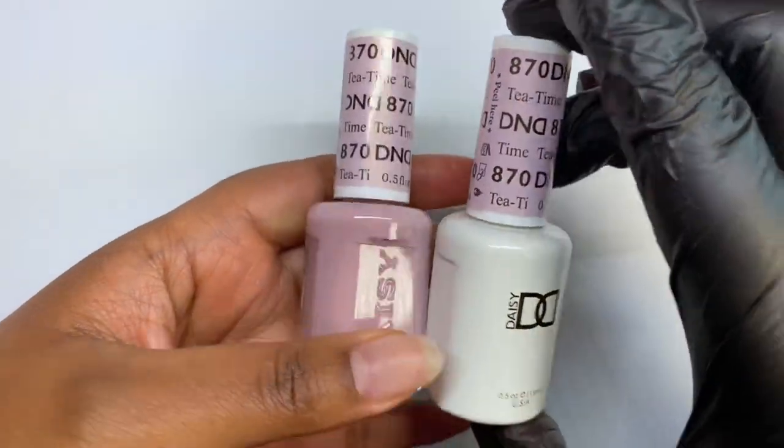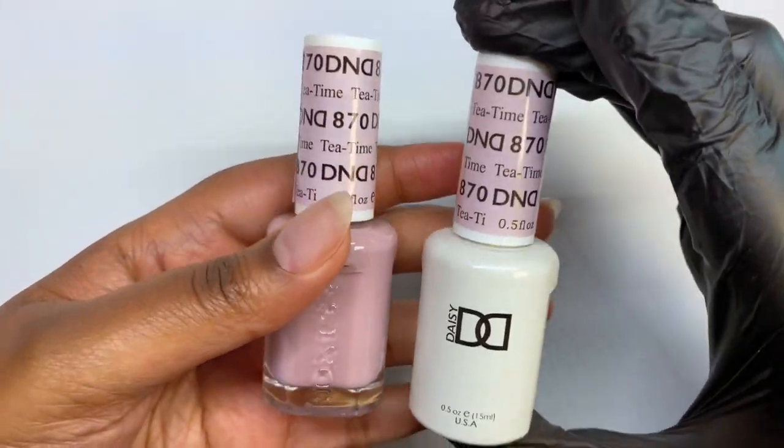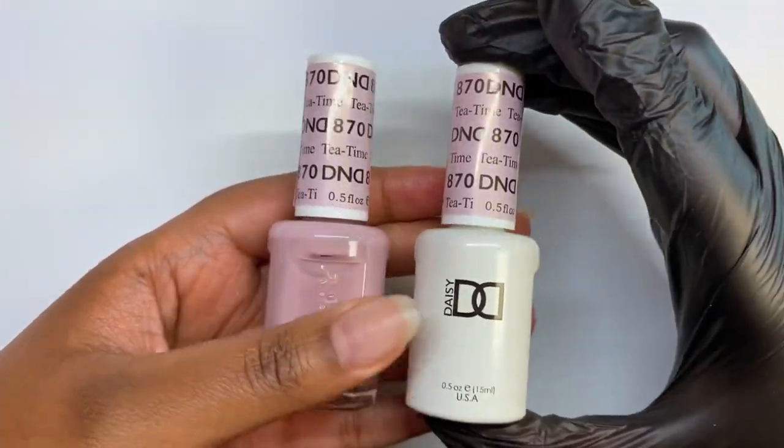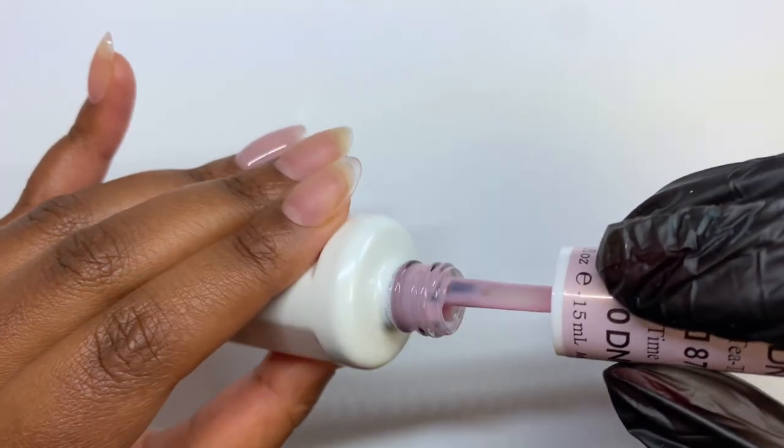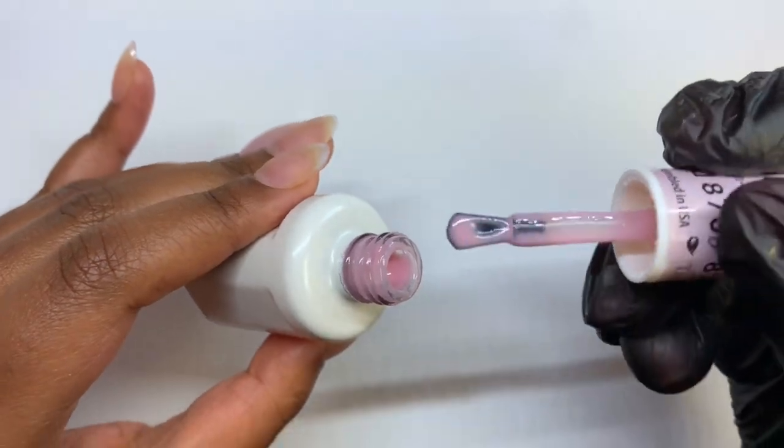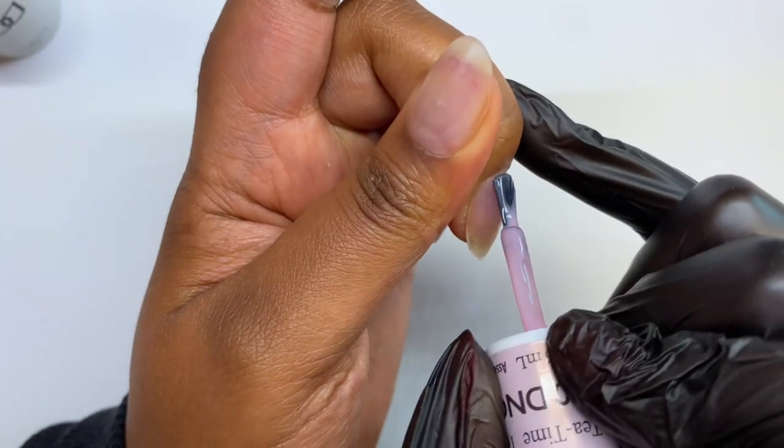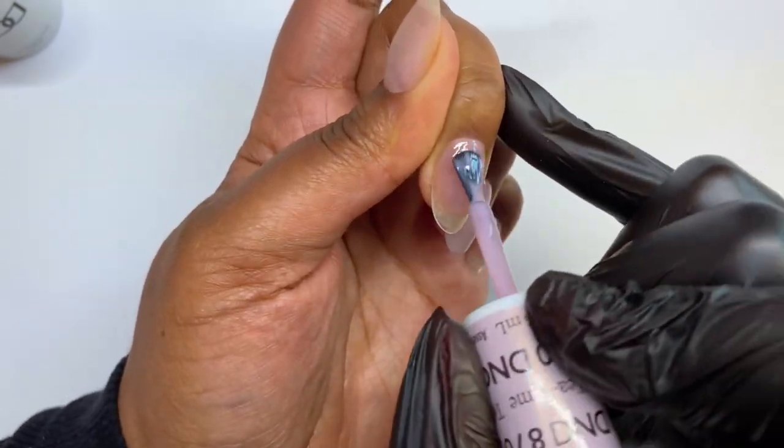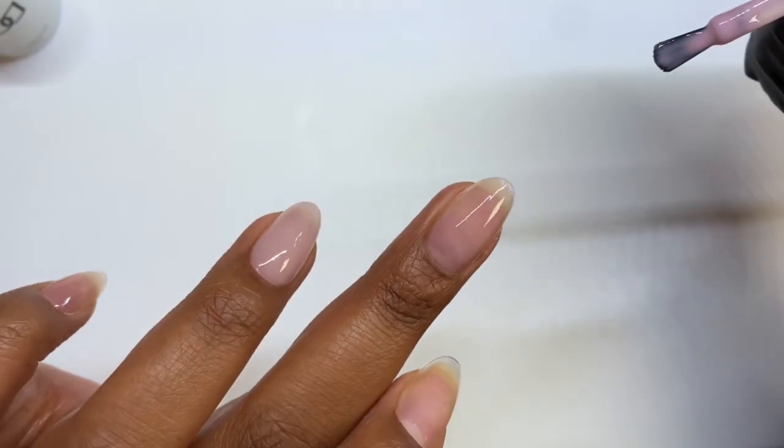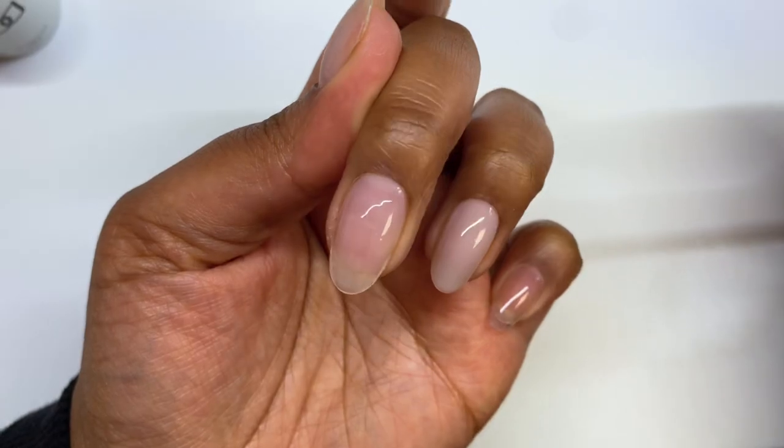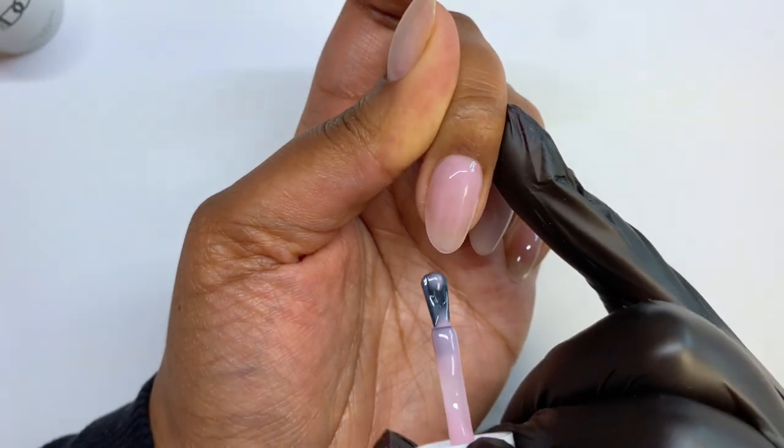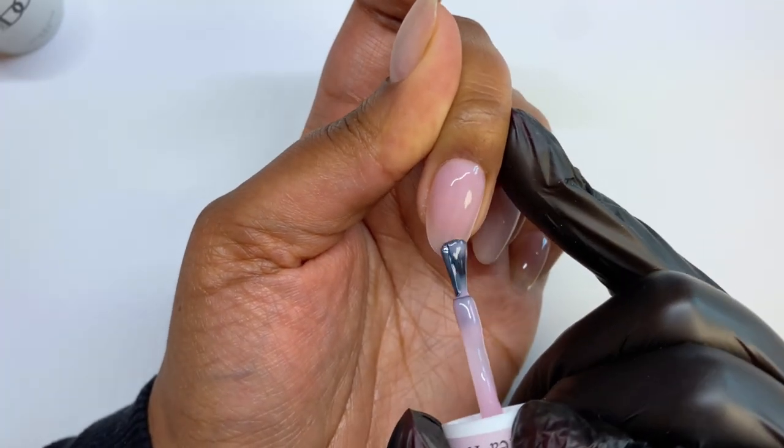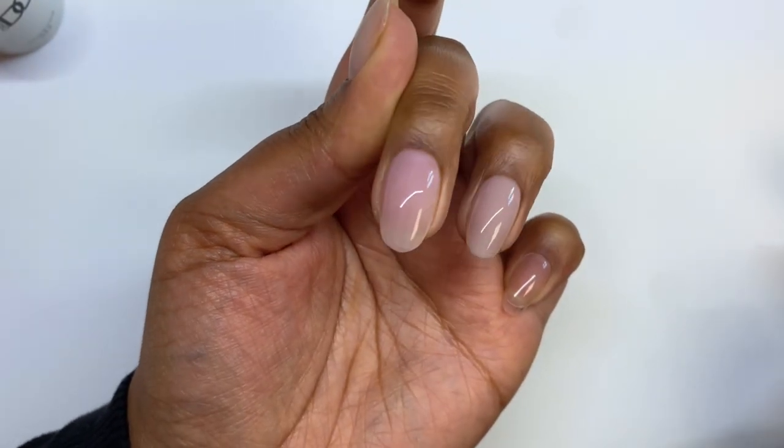Moving on, we've got Tea Time, which is this really nice purpley pink. Again, lots of purpley pink vibes going on here, guys. I went on the D&D website and I was just looking through a bunch of swatches. They're actually pretty good for swatches, I have to say. They work with a lot of different people. Who Did Her Nails, who's also a YouTuber, has swatched a bunch of their polishes. And Karis Nail Art, also a really great person to follow for swatches, I think I've mentioned before.